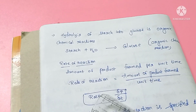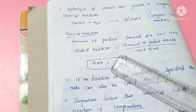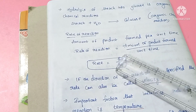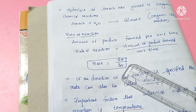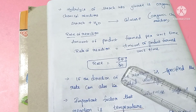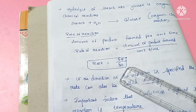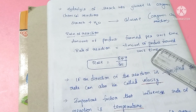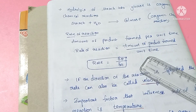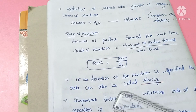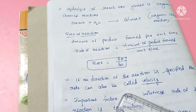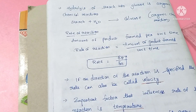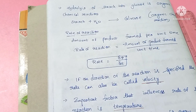The rate of reaction is defined as the amount of product formed per unit time. In the enzyme-substrate reaction, the enzyme-substrate complex forms and then releases the product. The rate of reaction equals the amount of product formed per unit time. If the direction of the reaction is also specified, it is called velocity. Key factors that influence the rate of reaction include temperature.